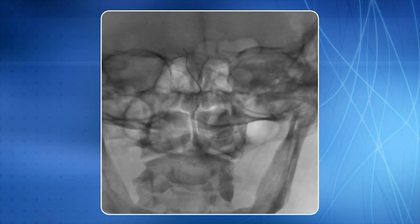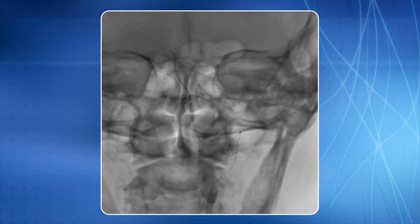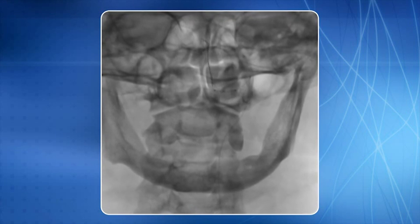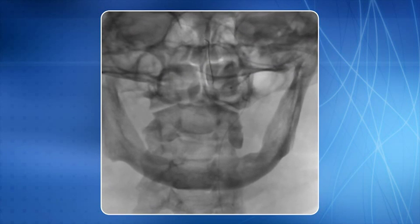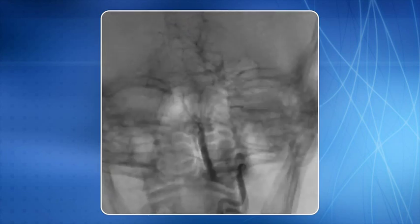A 2.5 millimeter PTCA catheter is negotiated through the curves of the vertebral artery into the lesion. Ballooning is in progress. A balloon expandable stent is then negotiated across the lesion. Stenting is in progress, and this is a good end result.